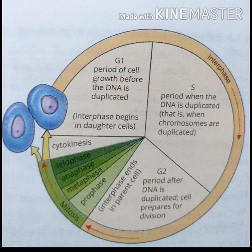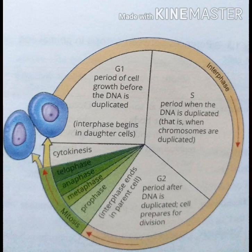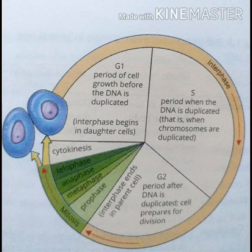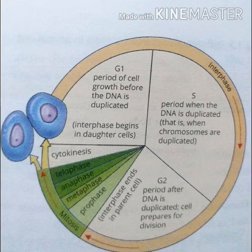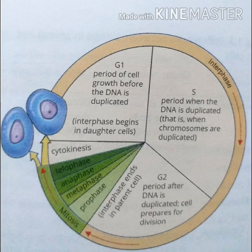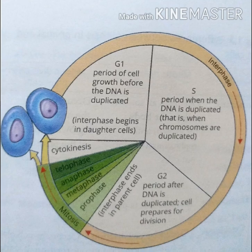After G1, it goes towards the S phase — the second phase of interphase. S phase is the synthesis phase. In this phase, more DNA is synthesized and the chromosomes are duplicated. Once the chromosomes are duplicated, the cell moves toward the third phase of interphase.